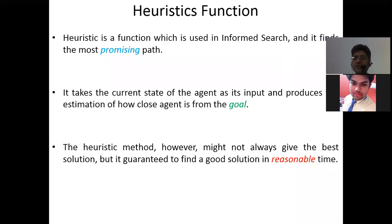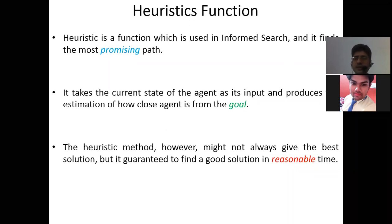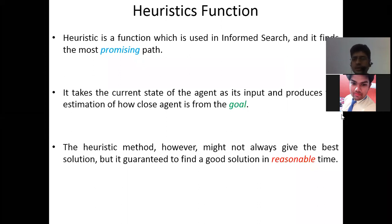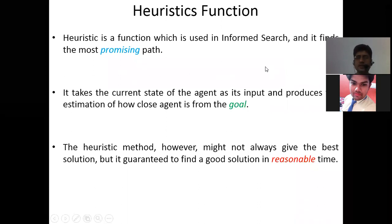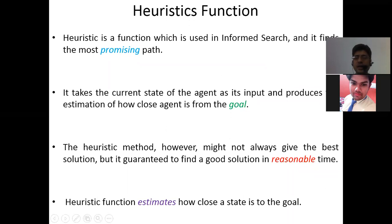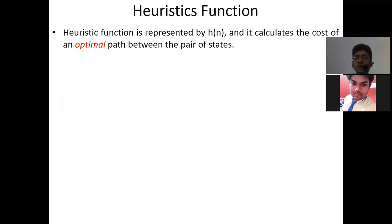As Varsha mentioned, heuristic gives a solution within a given deadline — similarly, the heuristic function finds a solution in a reasonable time, without guaranteeing an optimal result. Heuristic function is represented by h, and it calculates the cost of an optimal path between a pair of states. The value of the heuristic function is always positive.